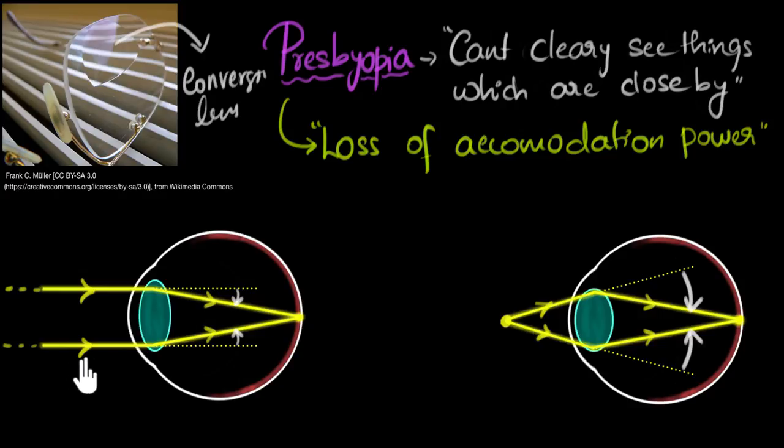So this part of the glass is used to correct any defects we might have for distant vision. So for example, if we have, say, myopia as well, then this part of the glass will correct myopia. But if you don't have any other defect, then we don't require any optical support here. Then this glass will not do anything, it'll just be flat. And so that's how bifocals are useful in correcting both presbyopia and any other defects that our eyes might have related to distant vision.